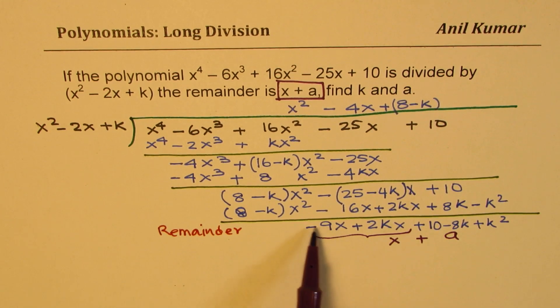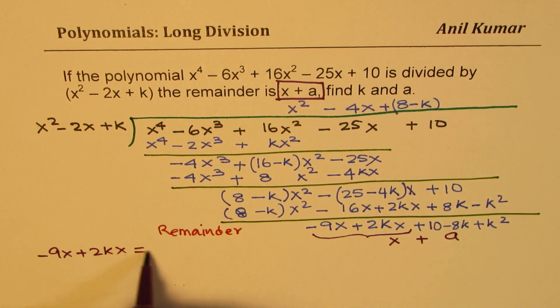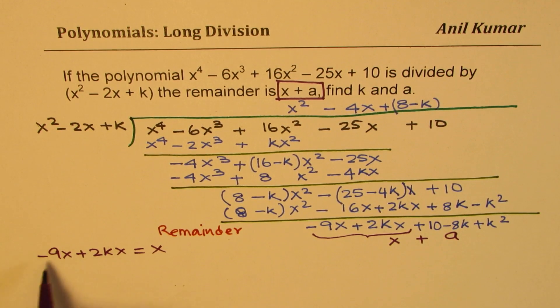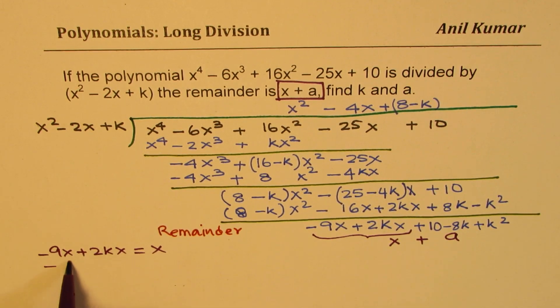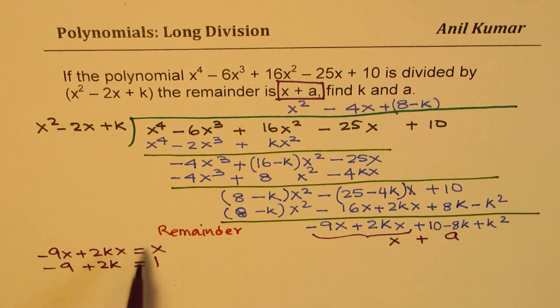We want all this to be x. So that is to say, -9x + 2kx should be equal to x. So x and x cancel. So we get -9 + 2k is equal to 1. Take x common, cancel it.